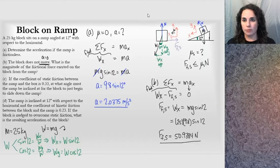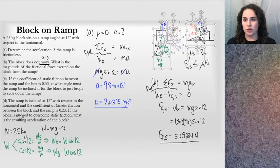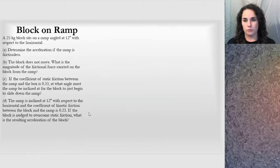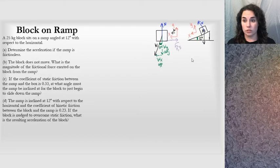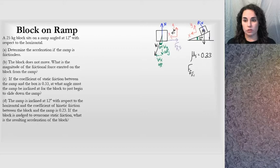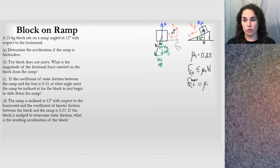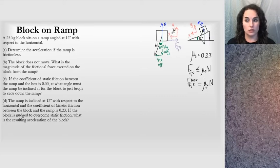Moving on to part C: I'll copy the work from before. We have the diagram with a static frictional force. Part C gives the coefficient of static friction between the ramp and the box as 0.33, so μs equals 0.33. That helps me find a maximum static frictional force — the static frictional force is less than or equal to μs times N, and at maximum it equals μs times N. I need μs to solve for this maximum value.